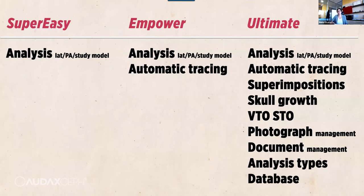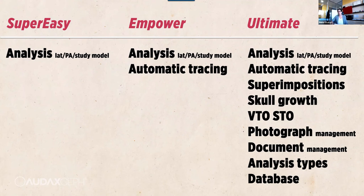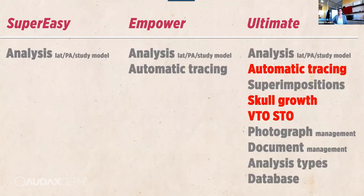When we talk about AUTICCEPT software, we talk about three different packages: SuperEasy, Empower, and Ultimate. In SuperEasy you can do analysis for lateral x-rays, PA, and study model. Empower already employs artificial intelligence for automatic tracing, which is really awesome functionality. And Ultimate is the big package with all of the advanced functionalities an orthodontist needs in their practice. Today we are going to talk about artificial intelligence with automatic tracing, skull growth projection, and VTO.